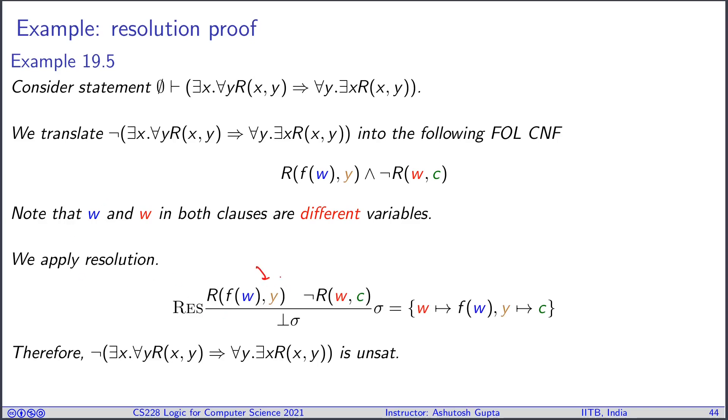So how do I resolve? I have this clause and this clause, and then I have to unify these two. I can take red W and map it to F(W), and Y maps to C, which gives the unifier, and then you derive false. Therefore this formula is unsat. Therefore the original goal was valid. That's how resolution proofs work.